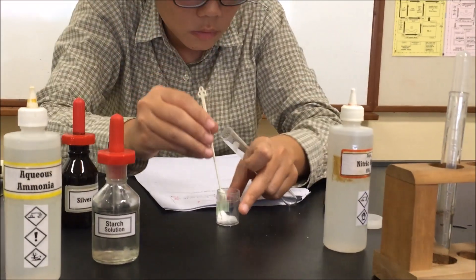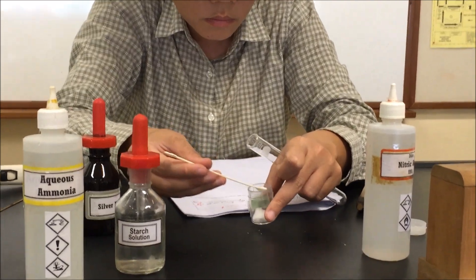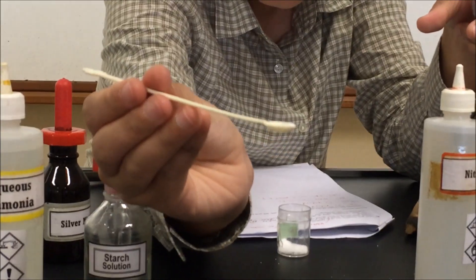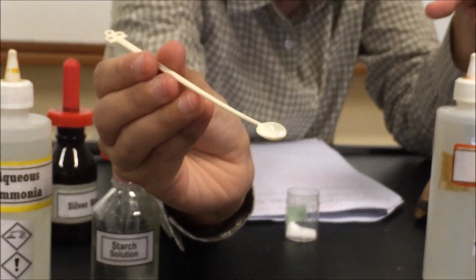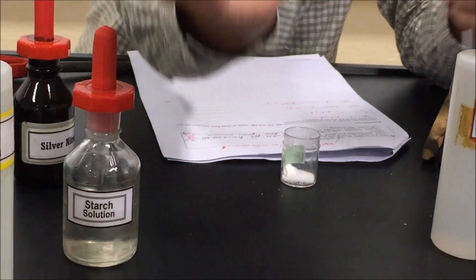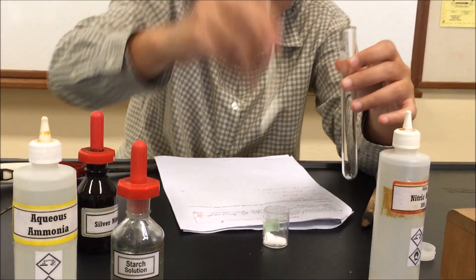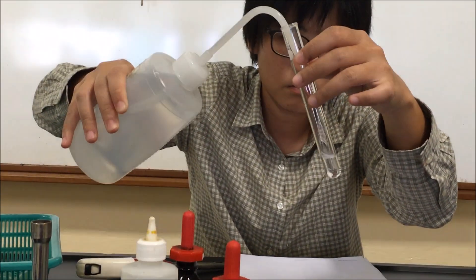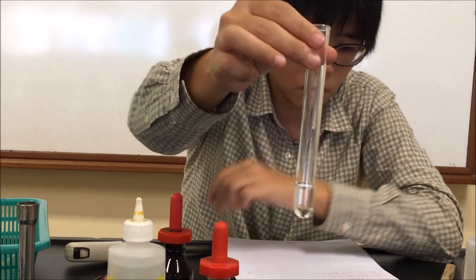Part D now. We're going to add solid T. So back to solid T. So using a smaller tip, that means you do not use too much of the solid T. Just a tiny amount. Put it into a new clean dry test tube. 2 cubic centimeters of distilled water. Shake to mix.